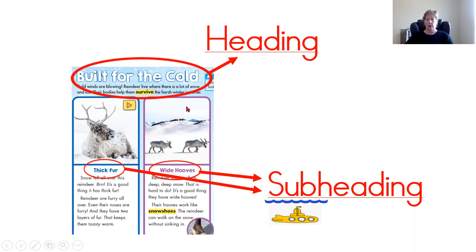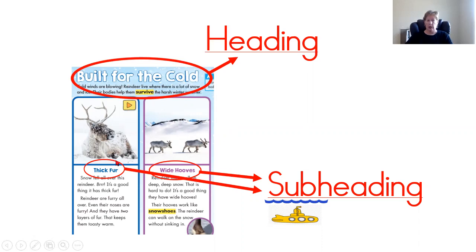Now there are some other parts of nonfiction text features in the article as well. One of them is called a subheading — you may not have heard that word before, but we'll go over it now. A subheading is kind of like a heading except that it is underneath the main heading. That's why we call it a subheading — think of a submarine, which is under the water. I put a little picture of that submarine there, and the subheading is underneath the heading.